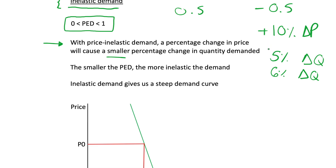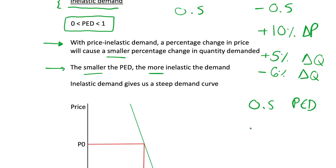This might cause a 5% change in quantity demanded — we could have 6%, 7%, anything less than 10%. If this was a positive change in price, we could have a 5% increase or a 6% decrease in demand — both of these would be inelastic. The smaller the price elasticity of demand, the more inelastic — a PED of 0.5 is more inelastic than a PED of 0.9.